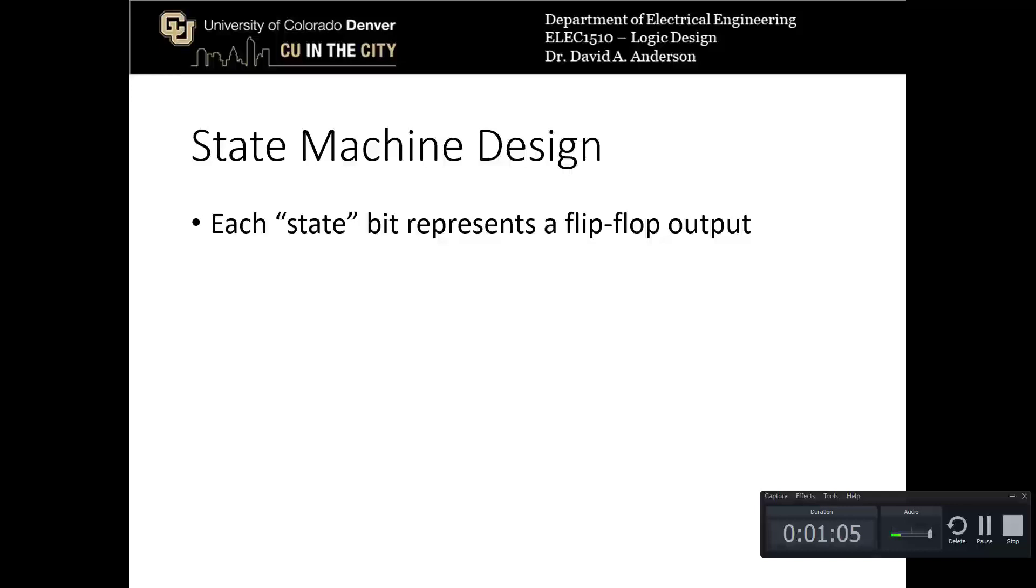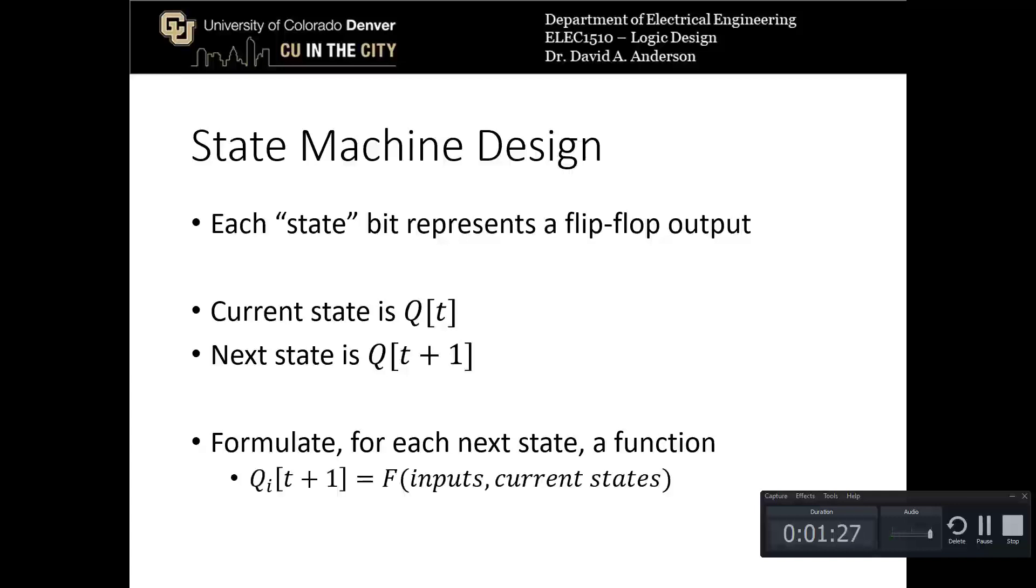These represent flip-flop outputs as well because they're represented by variables which are the output variables from the flip-flops. Therefore we would say that the current state of a flip-flop is q, the next state is q. We want to formulate for each next state a function. Those functions for q sub i of t plus 1, the sub i, because we will have multiple flip-flops in any given state machine, is going to be a function of the inputs and the current states.